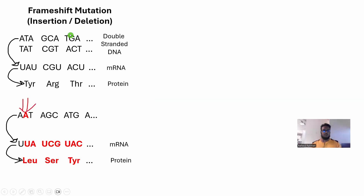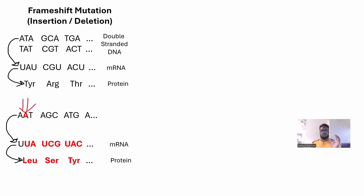So what happens if an insertion occurs? Suppose there is an A inserted right after the first A, so ATA becomes AATA. An insertion has happened. The entire reading frame has been shifted, and since amino acid synthesis comes in groups of three, now AAT will become UUA in the mRNA. The mRNA will be completely different now.